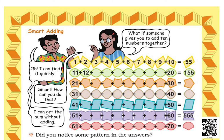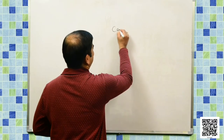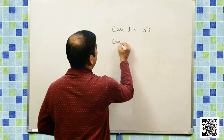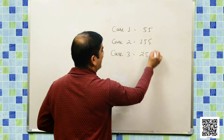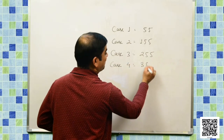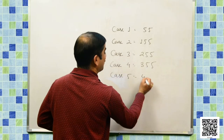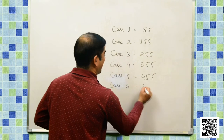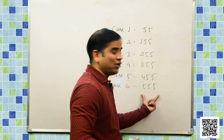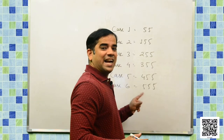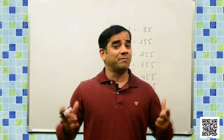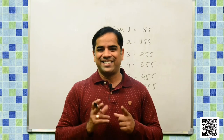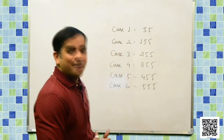You are all smart enough to do this task. From 21 to 30, it should be 255. Case 1 is 55, Case 2 is 155, Case 3 is 255, Case 4 is 355, Case 5 is 455, Case 6 is 555. As given in your book, it starts with 51 and ends with 60, and the sum of these 10 numbers from 51 to 60 is 555. So, what should be the sum from 61 to 70? Exactly — it should be 655. This also follows a pattern.